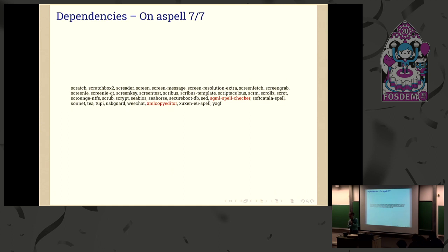I'm curious what kind of suggestions you have for the Nuspell spell checking library — what's going to make your writing much faster and better, and how we can improve that. But also maybe a short discussion or questions in general on how to deal with this jungle of dependencies.